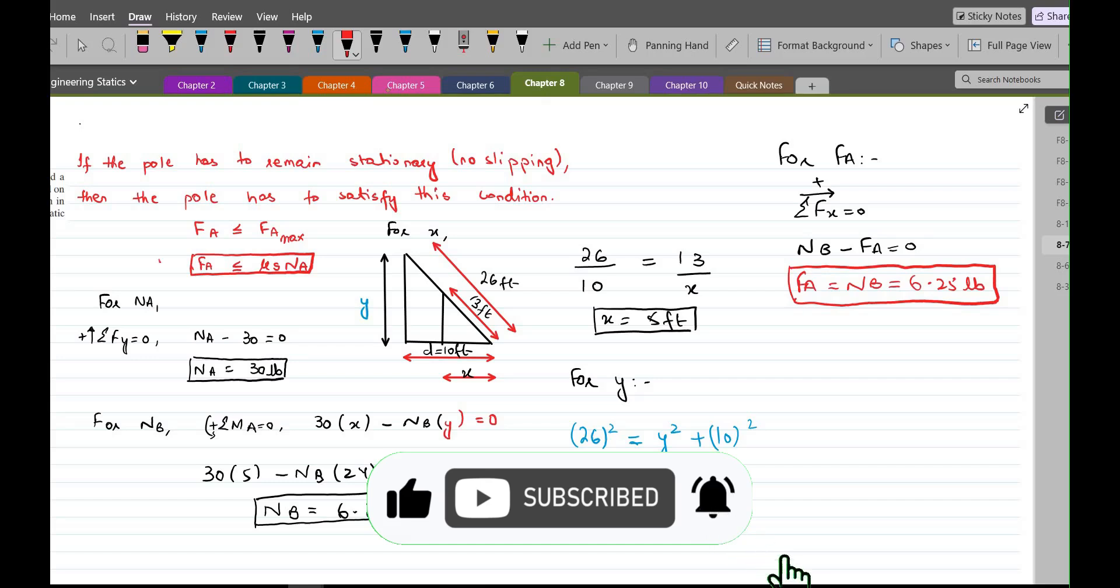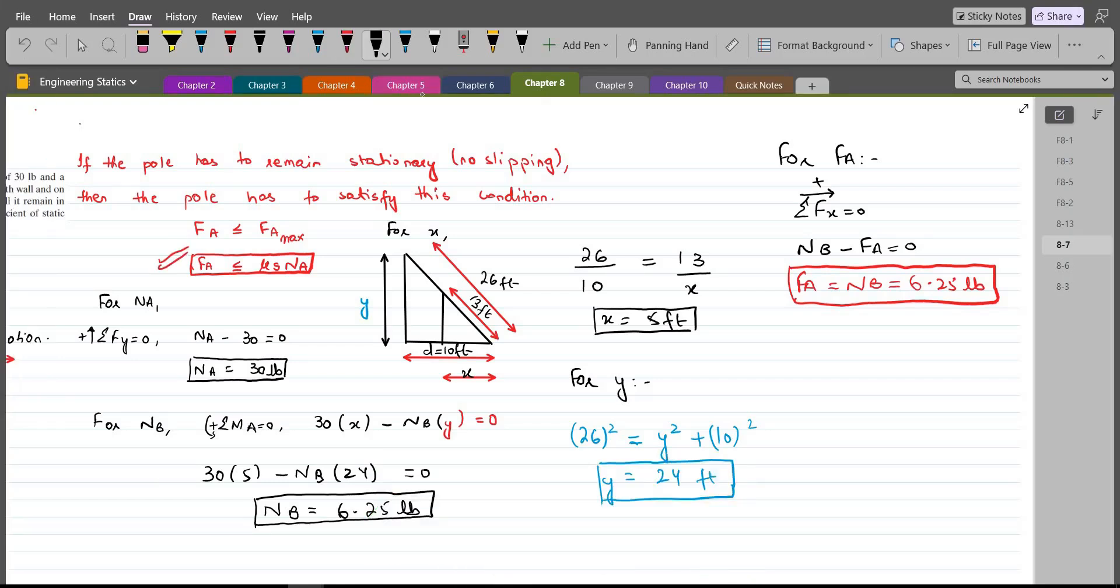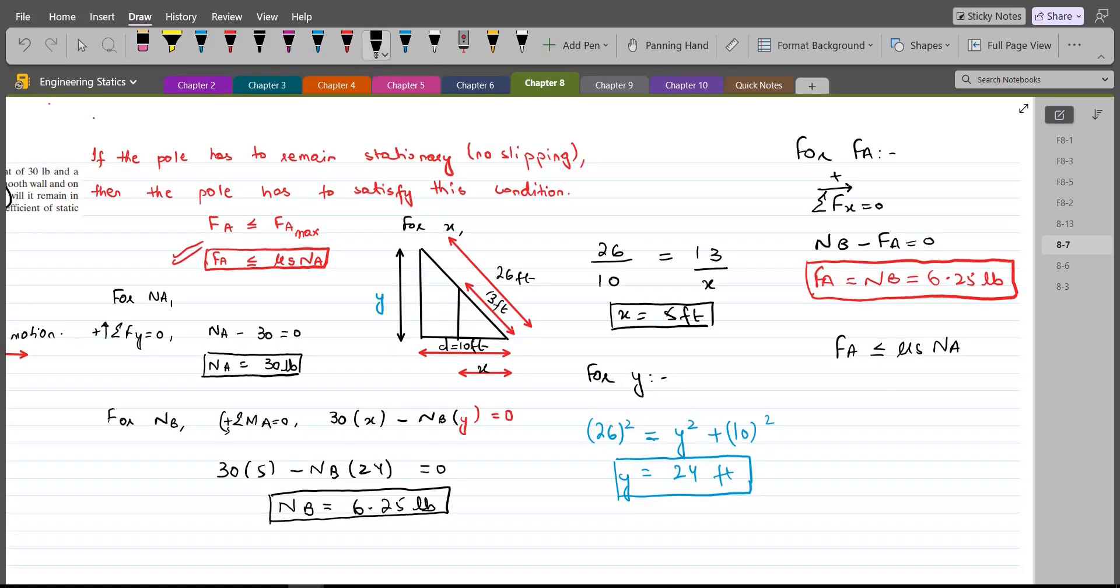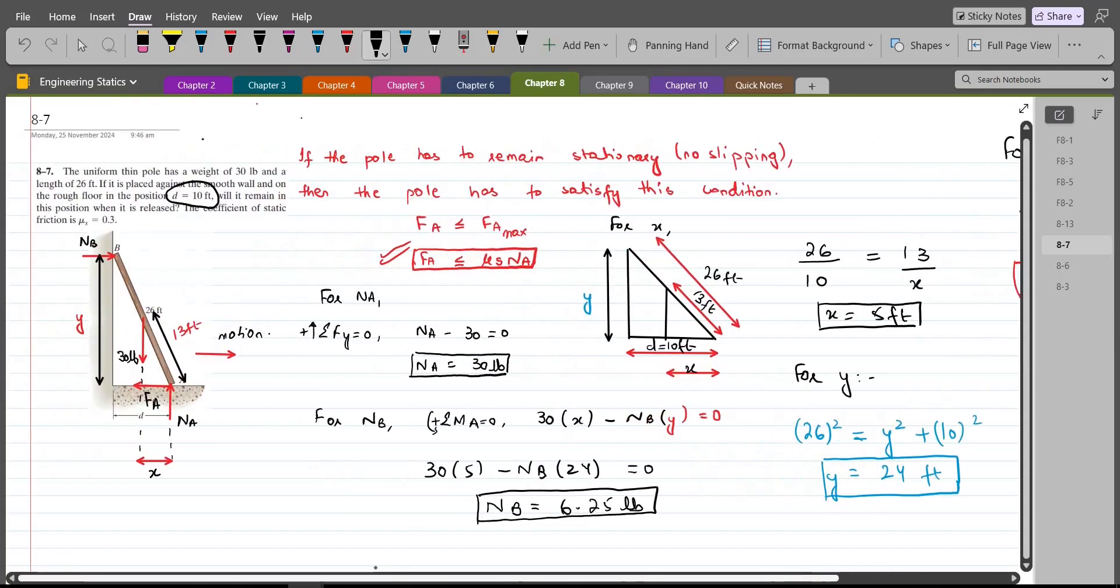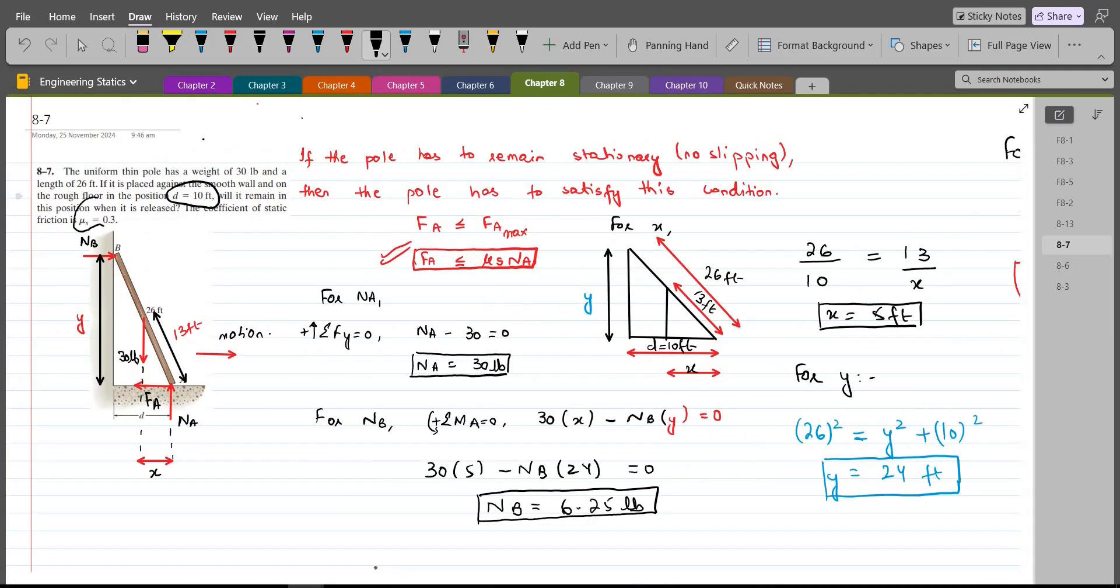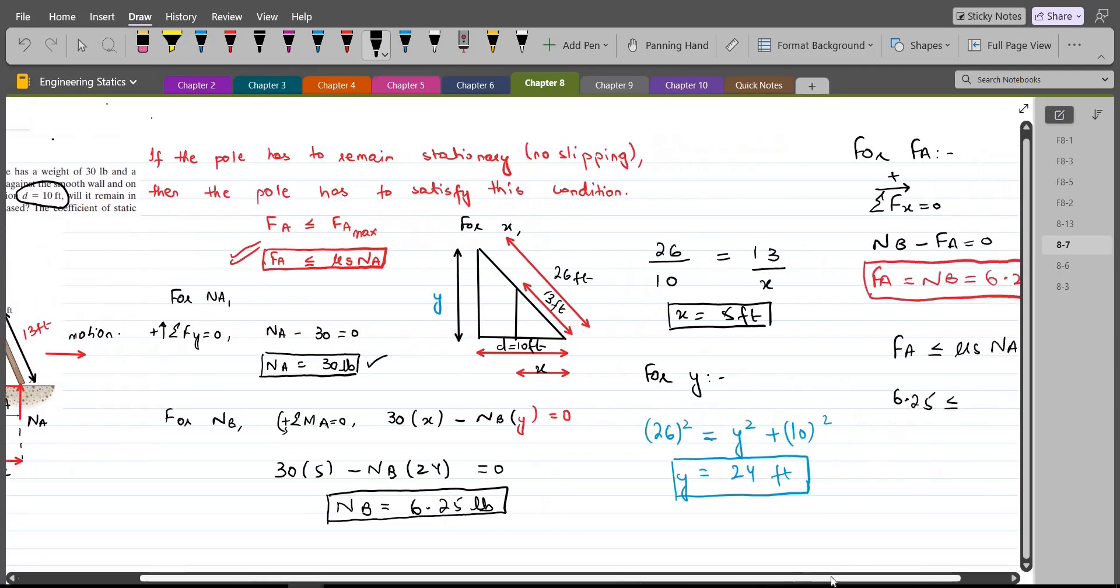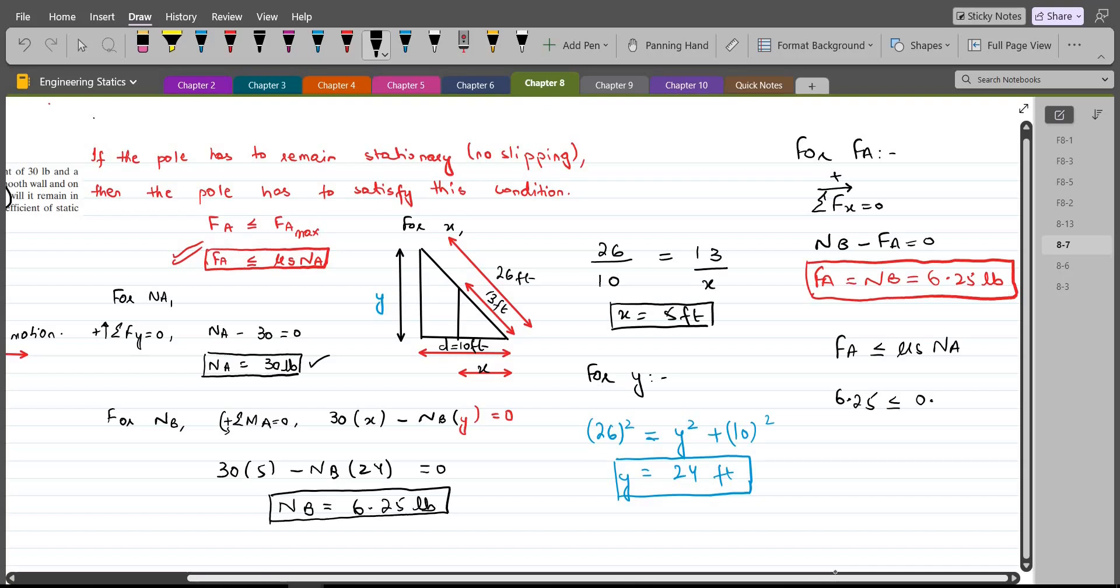Now, we have to verify this statement as well. So, Fa has to be less than or equal to μs times Na. So, Fa which is 6.25 has to be less than or equal to the product of the coefficient of static friction which is 0.3 and the Na force which is the normal reaction from the floor at point A which is 30 lbs. So, 0.3 times 30.